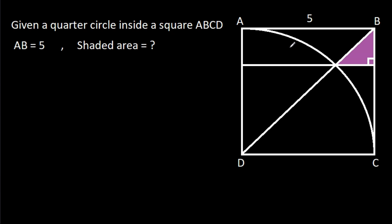In this video, we have been given a quarter circle inside a square ABCD, where AB is 5. We have to find the shaded area.